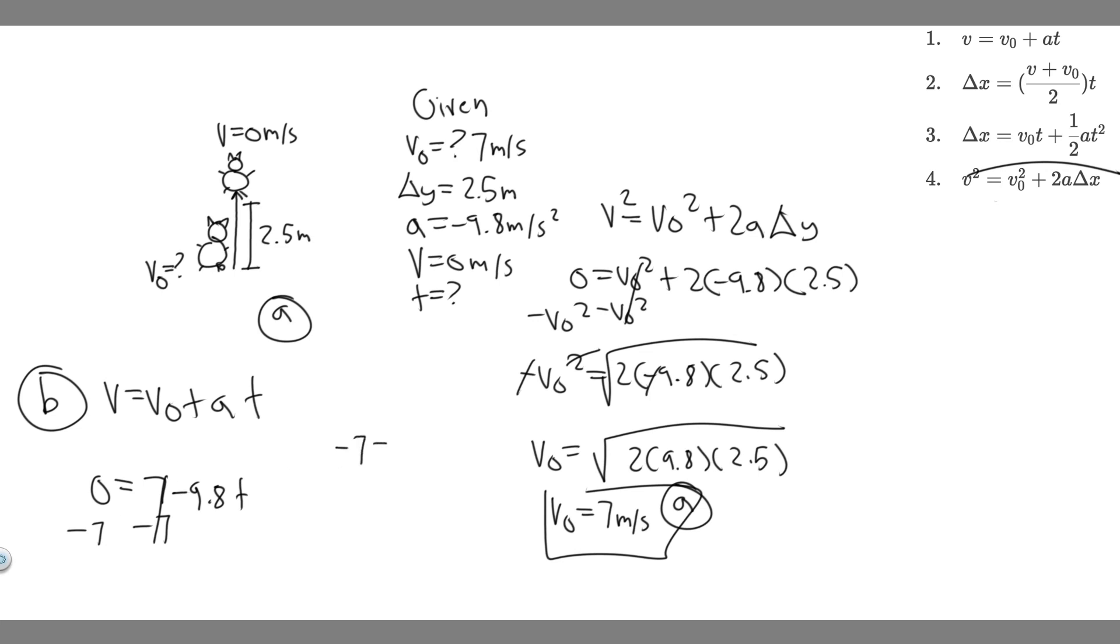And you'll get minus 7 equals minus 9.8t. And then you can just divide by minus 9.8 to get this by itself. So minus 7 divided by 9.8. You're going to get t is equal to 0.714. And then it's going to be in seconds, because this is time.